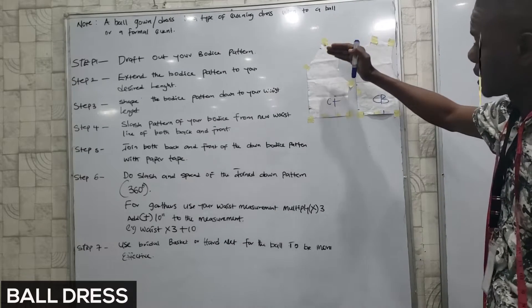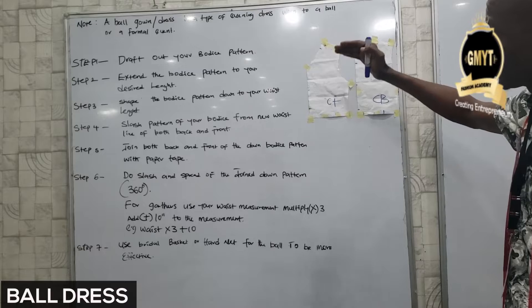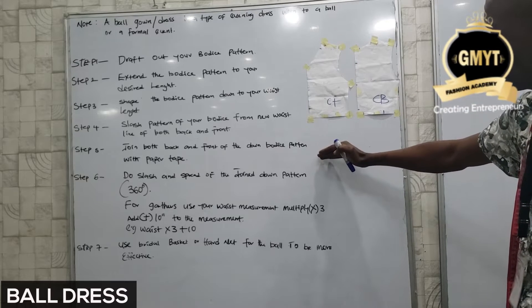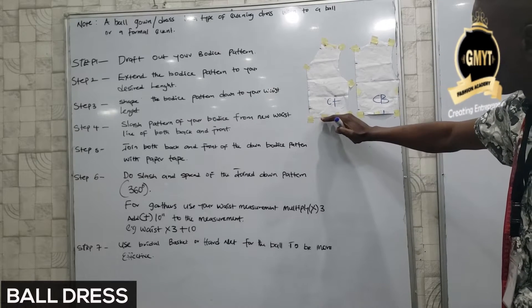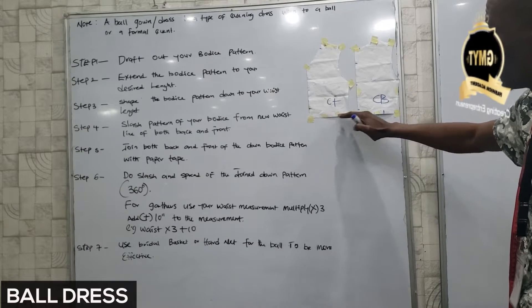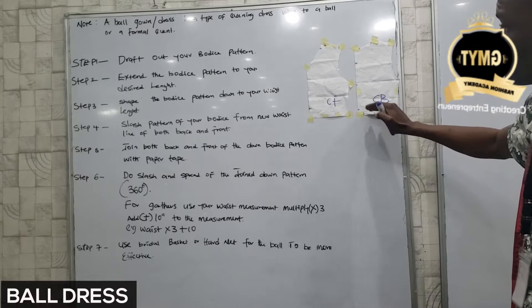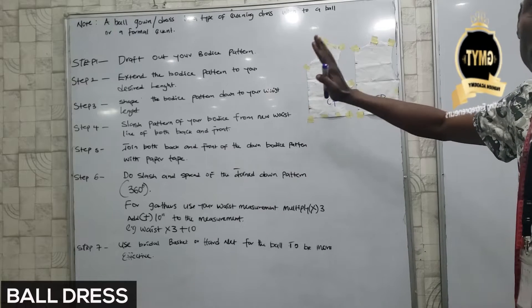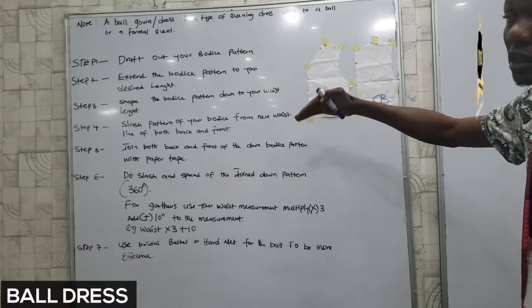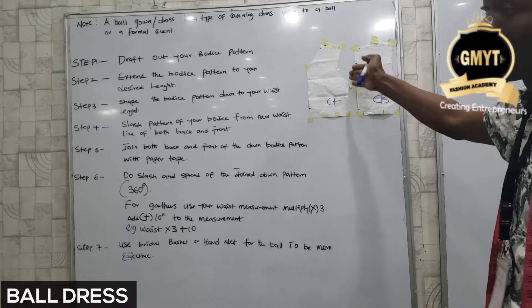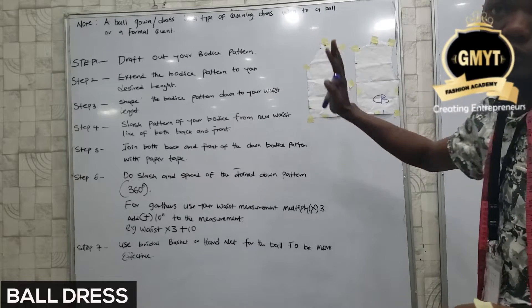If you look at the miniature pattern, the miniature pattern may not get to the hip level. I stopped it from the waist for both back and front. You can do that or you can do a complete pattern and remove from that part whatever you want, because you are extending it to a dress.